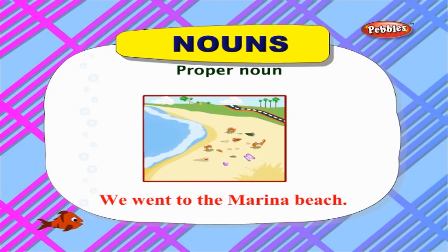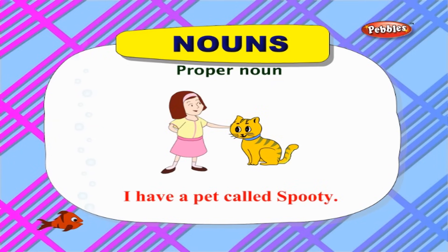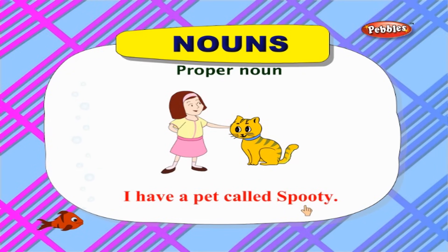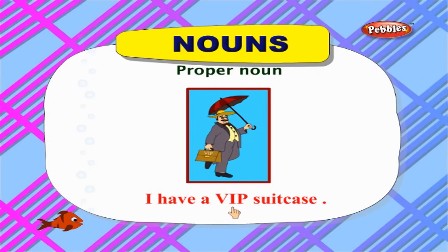'We went to the Marina Beach' — here, Marina is the special name given to a particular beach. 'I have a pet called Spootie' — here, Spootie is the special name given to a particular cat. 'I have a VIP suitcase' — here, VIP is the special name given to the particular brand of suitcases.